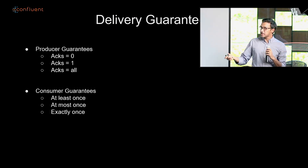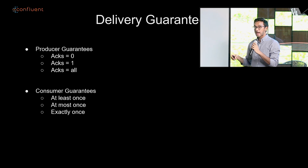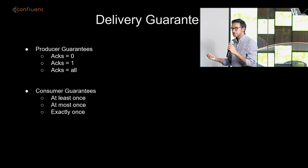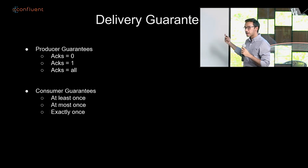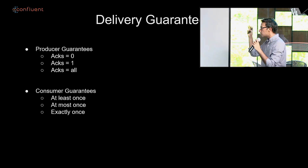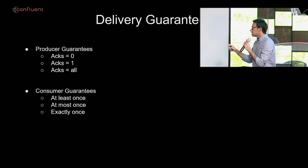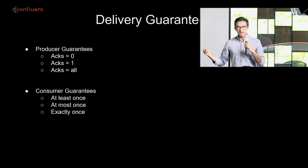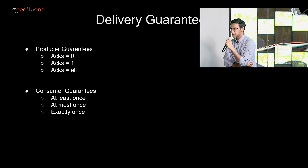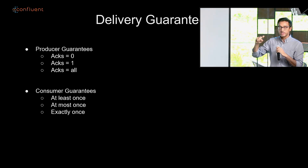Similarly, a consumer has certain guarantees as well. When you pick a message, you can say you want to process it at least once, at most once, or exactly once. At least once ensures you don't drop any data. At most once is useful when your consuming application is not idempotent — for example, if you're writing into SAP and generating invoices, you don't want to duplicate a million-dollar invoice. Exactly once is the holy grail — the best of both worlds — but there are certain things you have to do to design for exactly once, so it's more complex. But it is possible, and there are many customers using exactly once for processing.